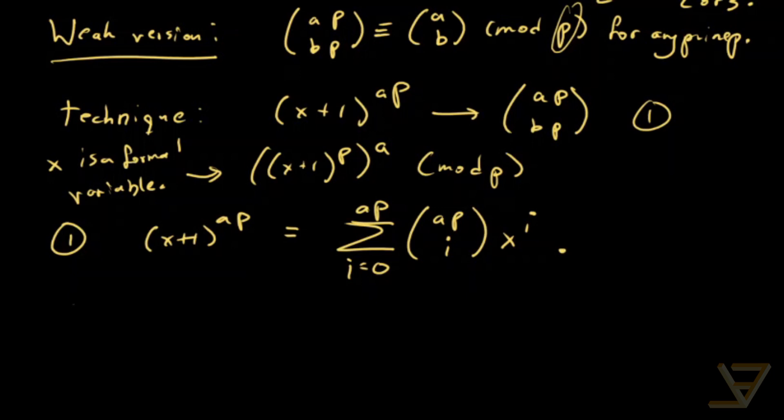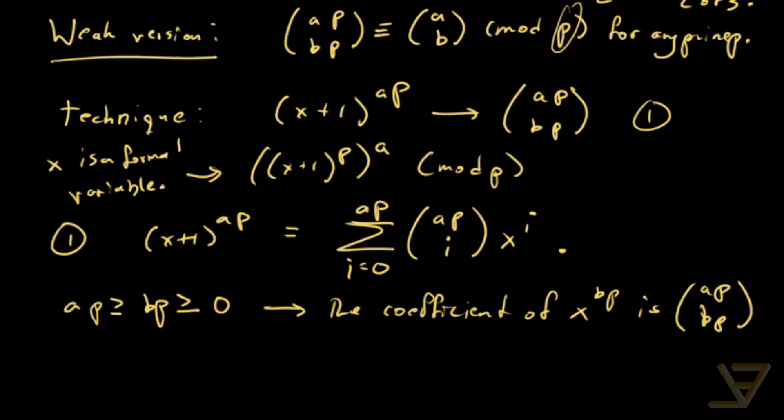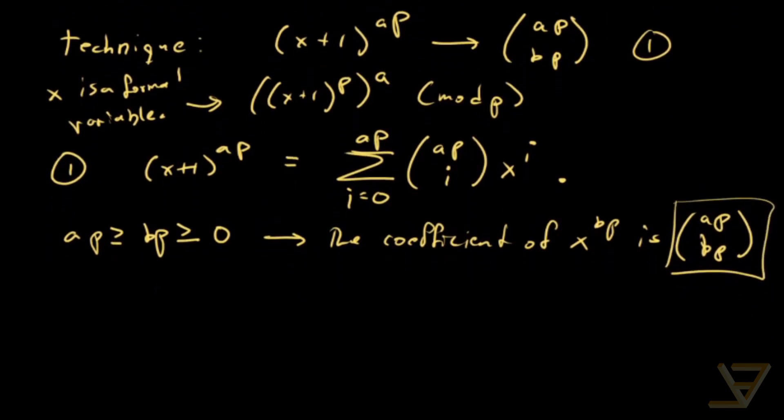But notice that because a p is greater than or equal to b p, because a is greater than or equal to b, and they're both greater than or equal to 0, we find that the coefficient of x to the b p is a p choose b p. And that's going to be useful because finally we have this in play.